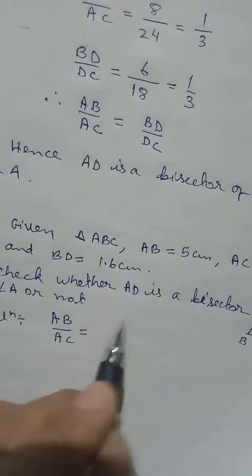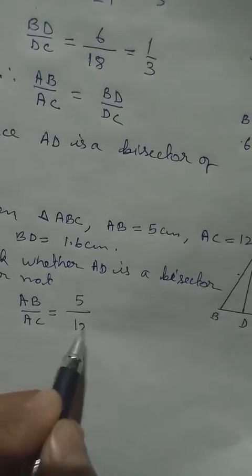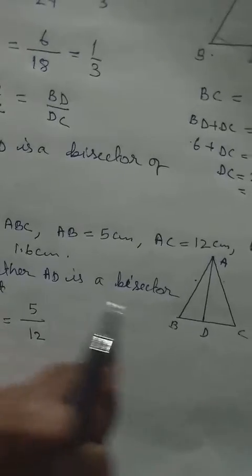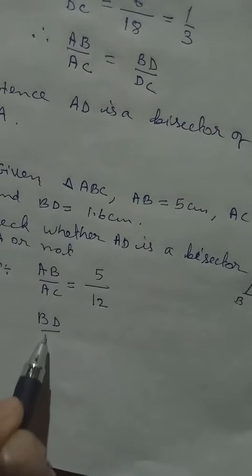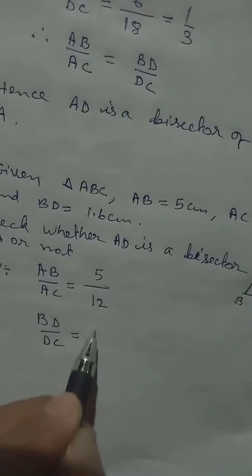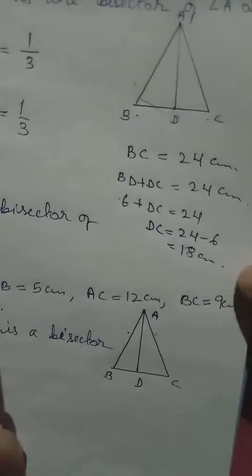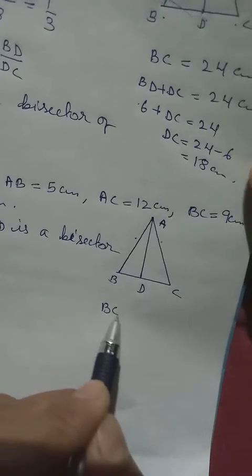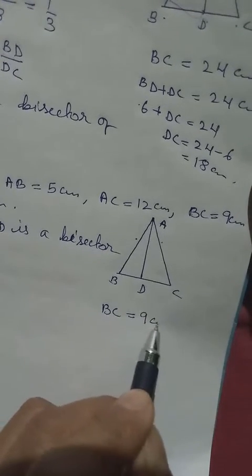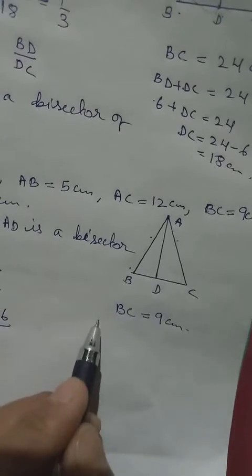AB we know is 5, AC we know is 12, we cannot cancel, let it be like that. Then next, the ratio of the opposite side, that is BD by DC. BD we know is 1.6. DC we don't know, but we know BC. The same way, BC we have 9cm. If you look at the figure, BC we can break as BD plus DC.